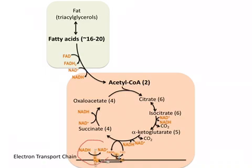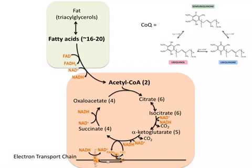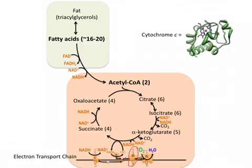All of that NADH created gets re-oxidized by complex one of the electron transport chain. As NADH is being re-oxidized, that energy released is transferred into a proton gradient — complex one pumps protons from the mitochondrial matrix across the membrane into the intermembrane space. Complex two re-oxidizes FADH2, but it is not a proton pumper. The electrons are transferred next to coenzyme Q, also called ubiquinone, a lipid floating in the inner mitochondrial membrane. Coenzyme Q then transfers the electrons to complex three, which uses some of that energy to pump protons across the matrix.